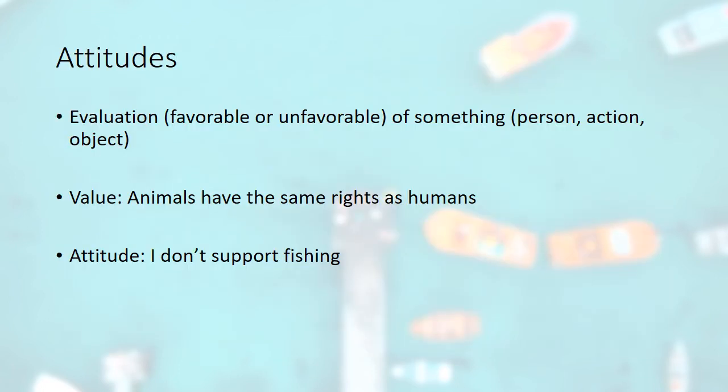I want to briefly introduce one more concept: attitudes. Sometimes people talk about values and attitudes interchangeably, but they're actually technically different things. An attitude is someone's favorable or unfavorable, positive or negative evaluation of one specific thing — a person, an action, an object — whereas a value is that underlying orientation that can inform your attitude. For example, I might have the value orientation that animals have the same rights as humans, and therefore I might have a negative attitude about fishing.